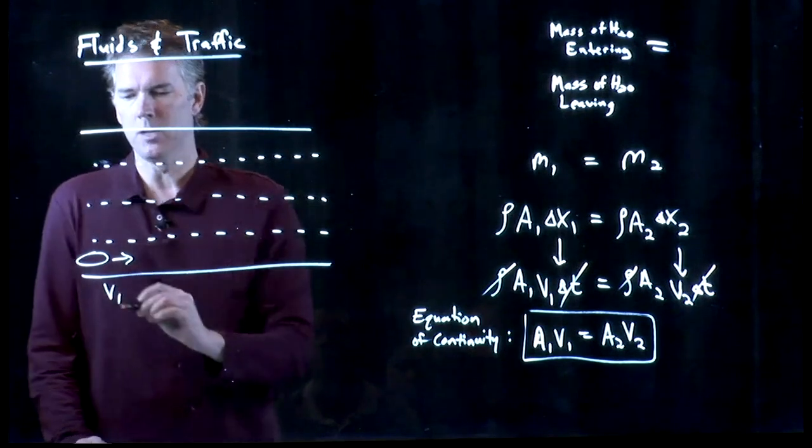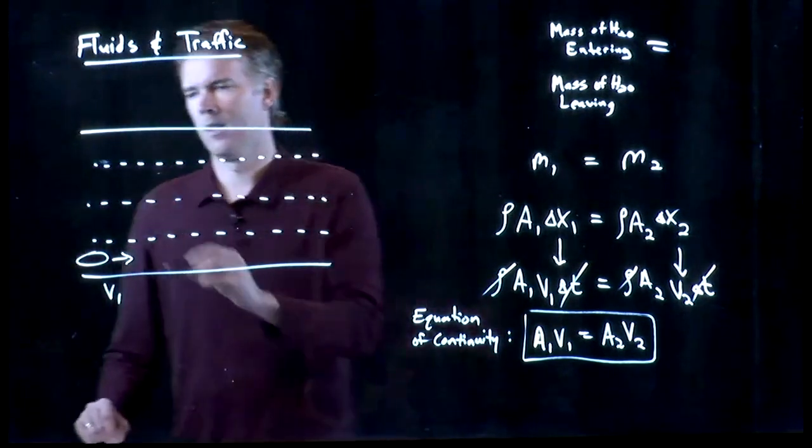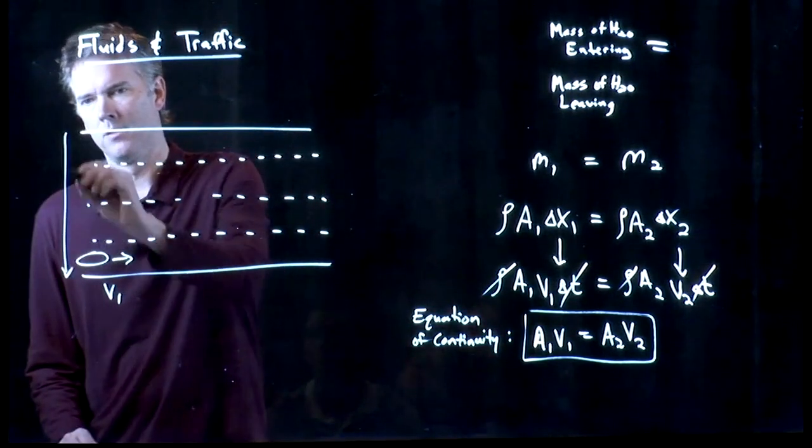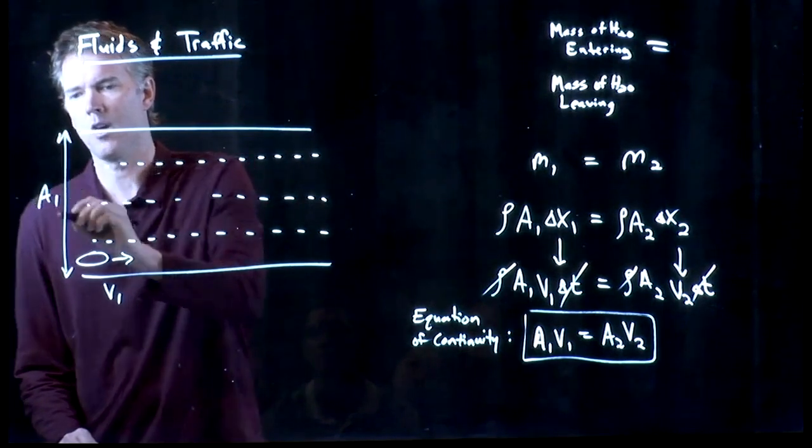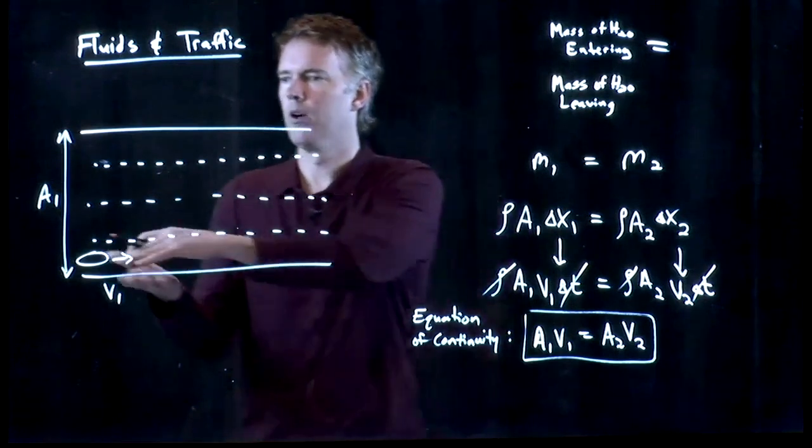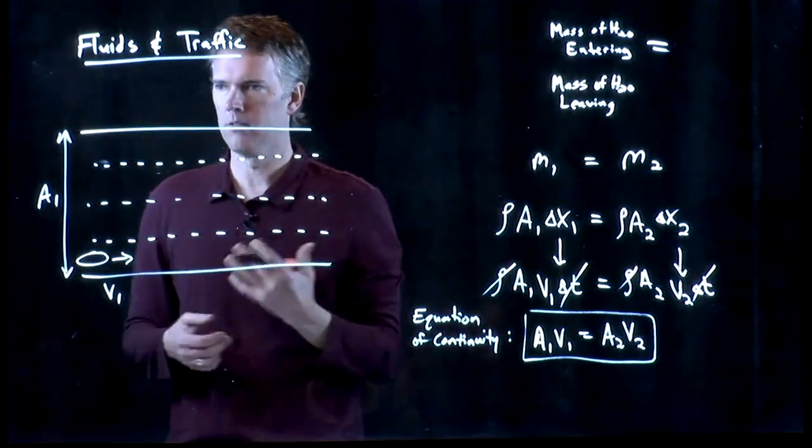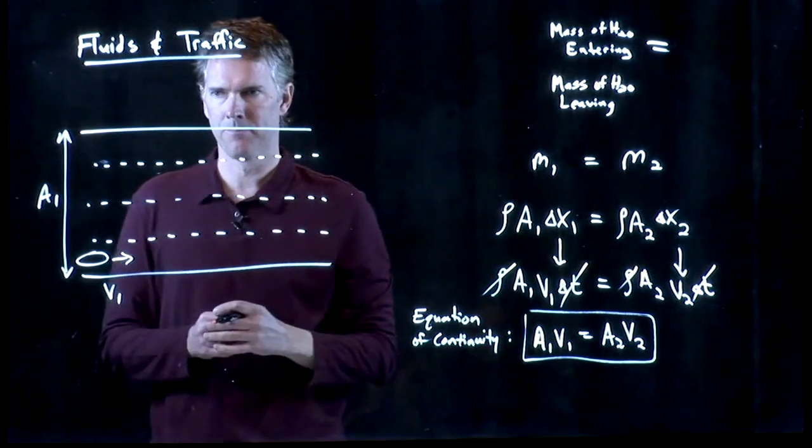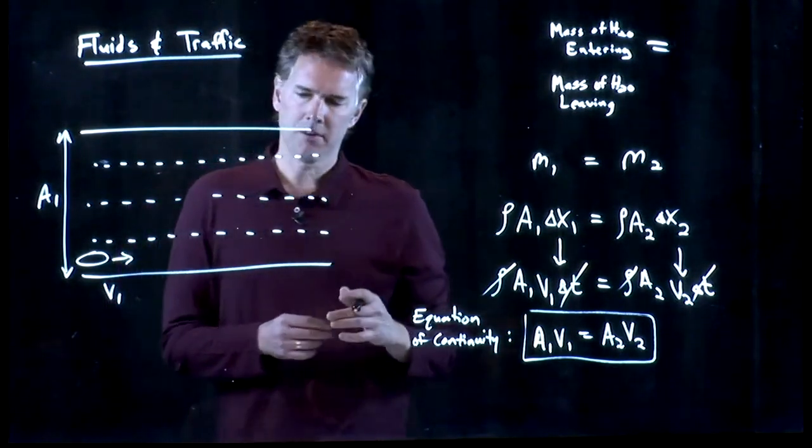And you're driving along in your car, and you're moving along at speed V1. This is your cross-sectional area. It's really a length, but it's okay. What's the cross-sectional area of the pipe is now the freeway.